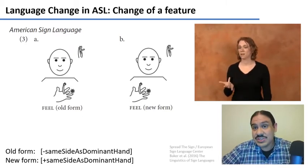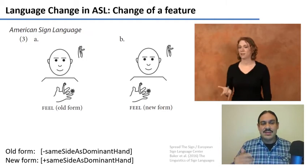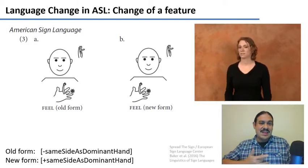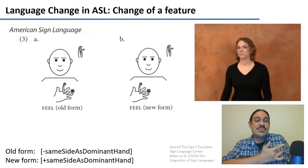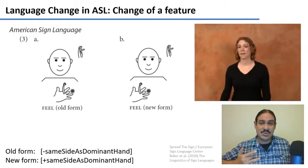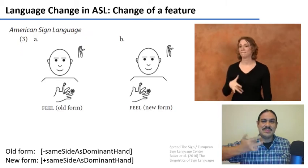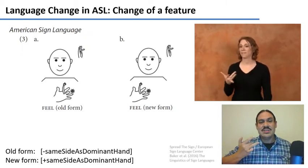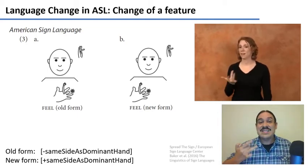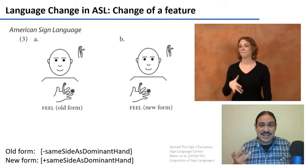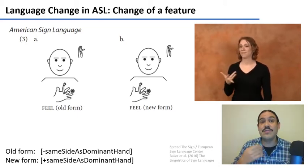You can also have a phonological feature change over time. The old form of the verb 'to feel' in ASL was done with the middle finger on the opposite side of the torso — so if signing with the right hand, the gesture is on the left side. This is called contralateral. In the newer form, the gesture is on the same side of the torso as the arm — this is called ipsilateral. So this feature has changed in the production of the sign for 'to feel,' similar to changing voicing or place of articulation in a spoken language.